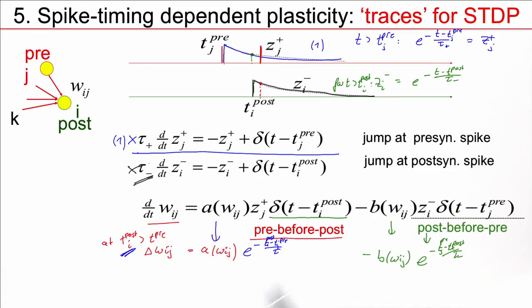So, now I have two possibilities. Either it's pre before post, or it's post before pre. So, for a single spike pair, the total weight change, delta w_ij, is an exponential on this side, with a time constant tau_+, and it's an exponential on this side, with a time constant tau_-, and the time axis here is t_pre. So, if pre is before post, I'm on this side, I have this positive weight change, that's this term here.